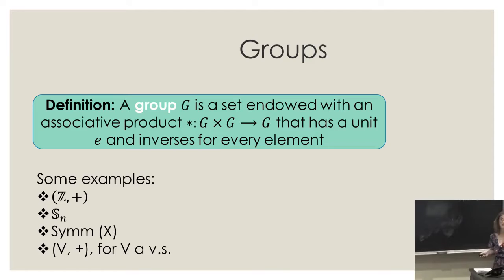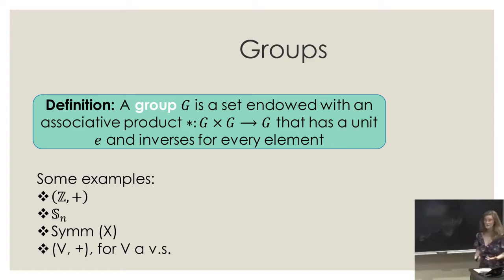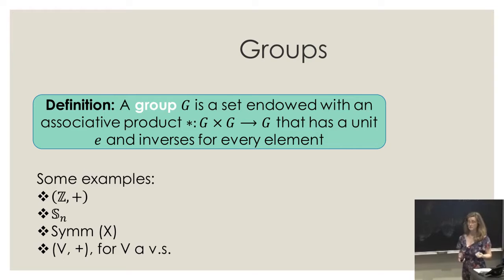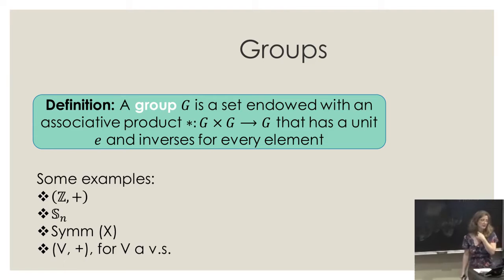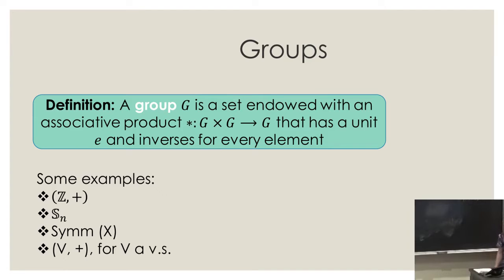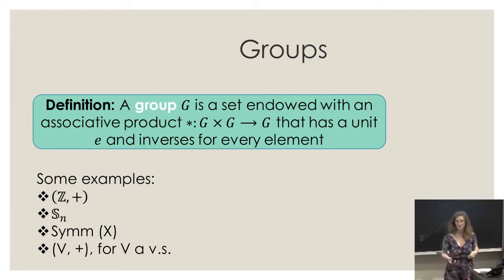If I'm going too fast, feel free to interrupt. A group is a set of elements with a binary operation called a product that is associative, has a unit, and each element has an inverse. Examples include the integers with addition, the symmetric group, the symmetries of an object with composition as the product and the identity map as the unit, and a vector space with addition (forgetting scalar multiplication).